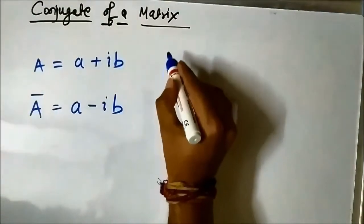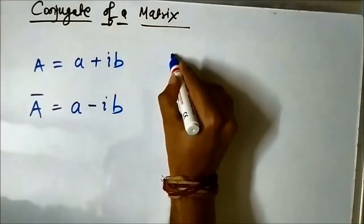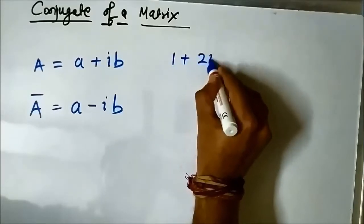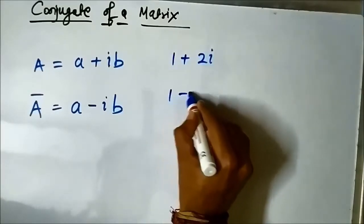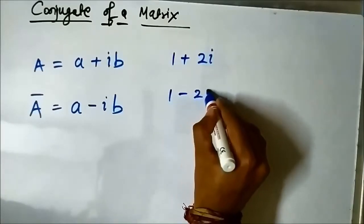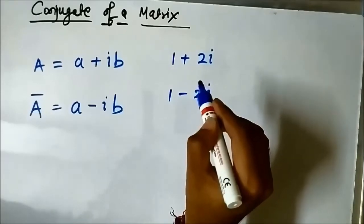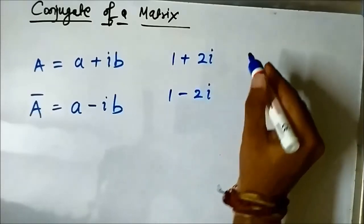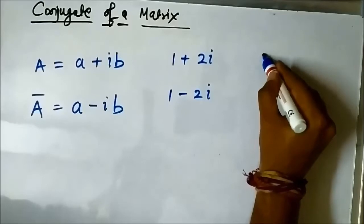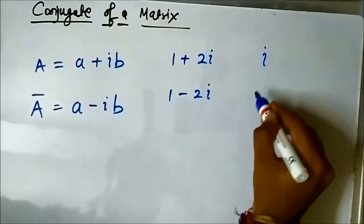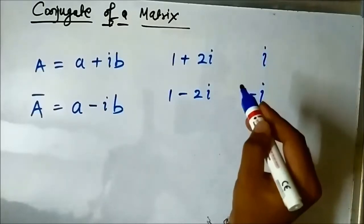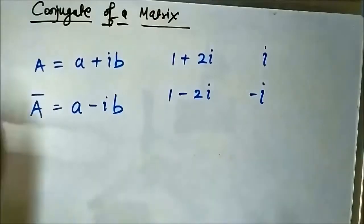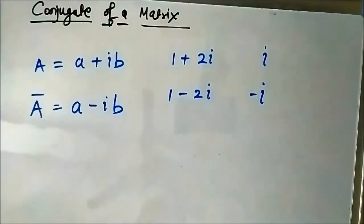For example, if we have a number 1 + 2i, its conjugate will become 1 - 2i. If there is a number, let us say only i, it becomes -i. So this is the whole idea of the conjugate.